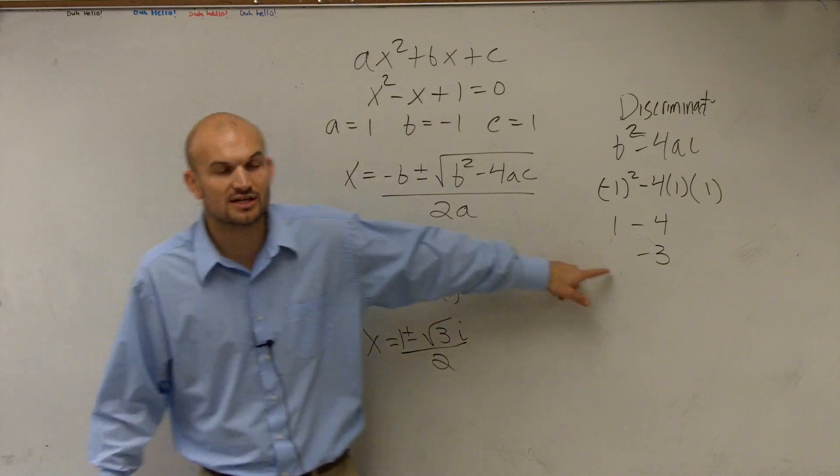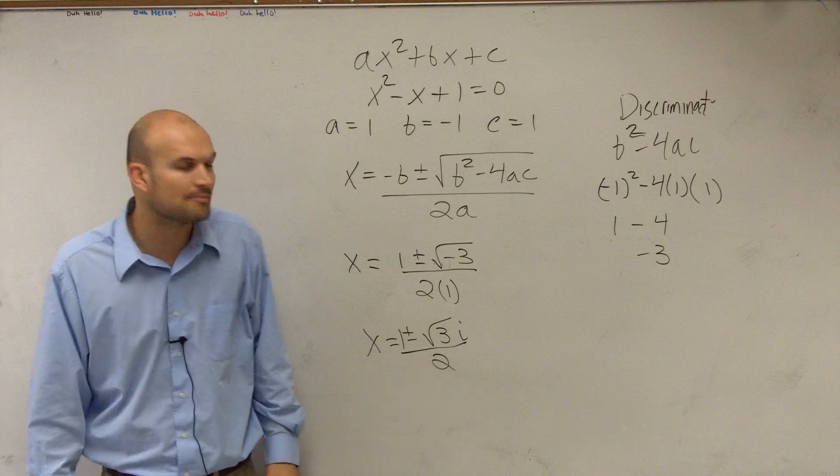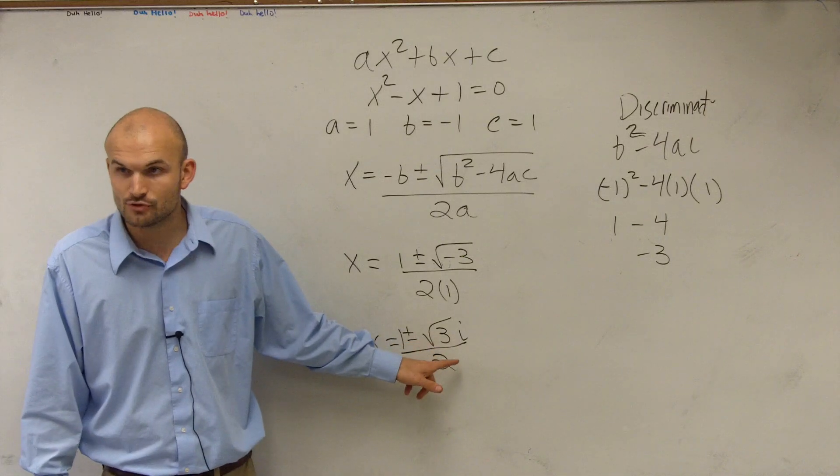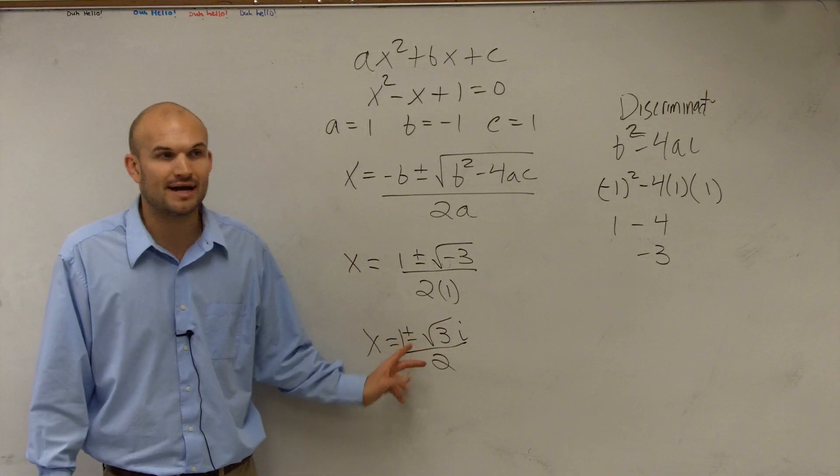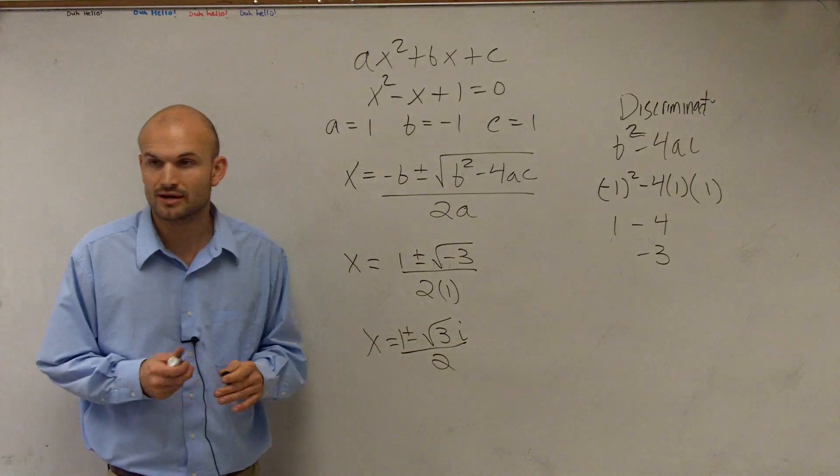And what you guys notice is, because my discriminant is negative, I know my final answer is going to be two complex roots. I'm going to have a complex root, and I'm going to have plus or minus, so I'll have two of them. So that's how you'd solve this by using the quadratic formula.